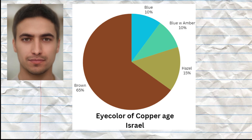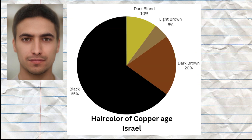The most common eye color among the 20 samples was brown, although there were 4 samples with light eye color and 3 samples with hazel eyes as well. The most common hair color among the 20 samples was black, although lighter hair colors such as dark blonde were also found among them.